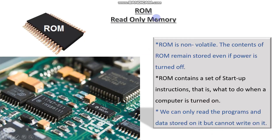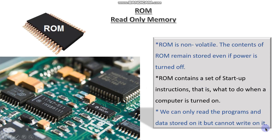Moving on to ROM — read only memory. ROM is non-volatile: the content of the ROM remains stored even if power is turned off, so it can be stored permanently and won't be lost if we turn off the system. ROM contains a set of startup instructions — that is, what to do when a computer is turned on. We can only read the programs and data stored on it but we cannot write on it, which is why we call it read only memory.